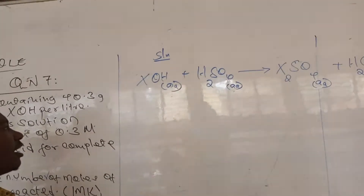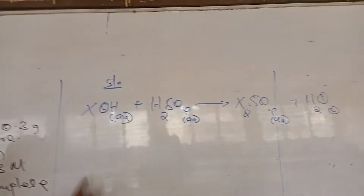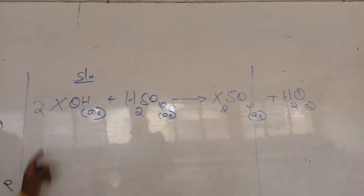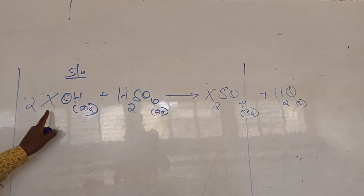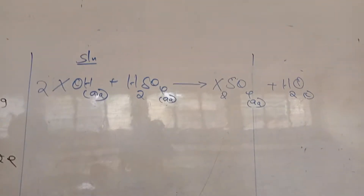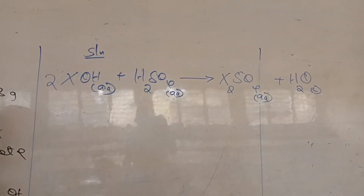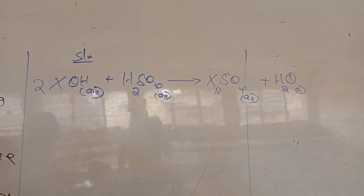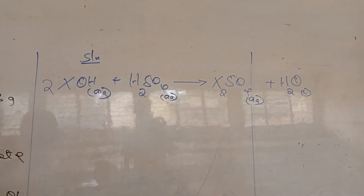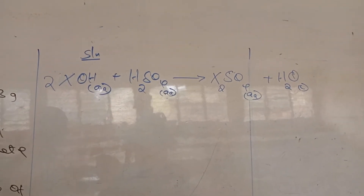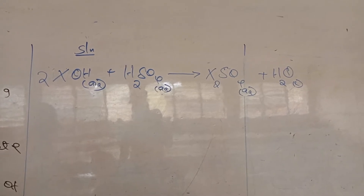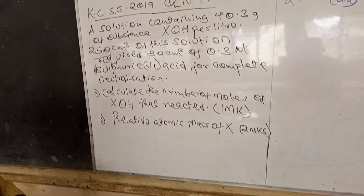We balance the equation by putting a 2 in front of X hydroxide, because X hydroxide is monobasic and when we react it with a dibasic acid we get a balancing coefficient of 2. So we have 1 X on the right and 2 X on the left, and with that we get a balanced chemical equation.